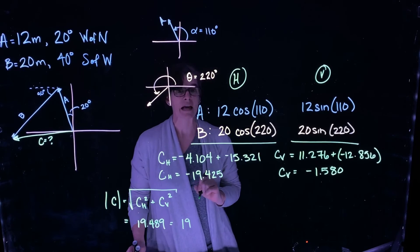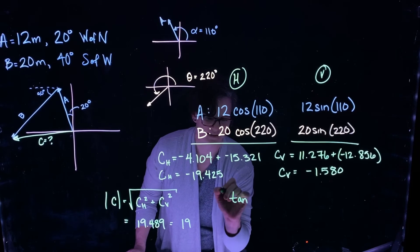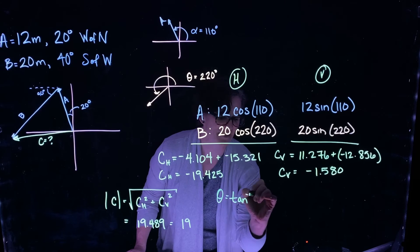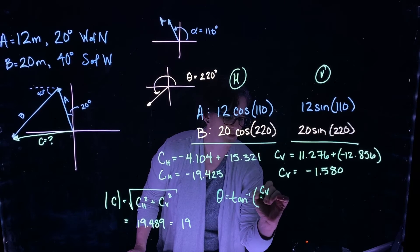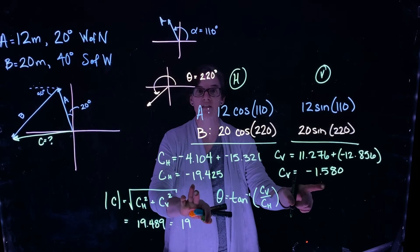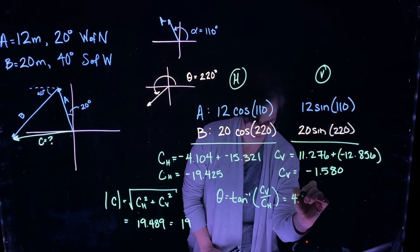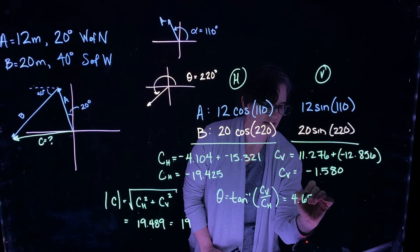Alright, what about the angle? Well, the angle we take, to get the angle, we take the inverse tangent of the vertical component over the horizontal component. And when I take the inverse tangent of these two values, I get an angle of 4.65 degrees.